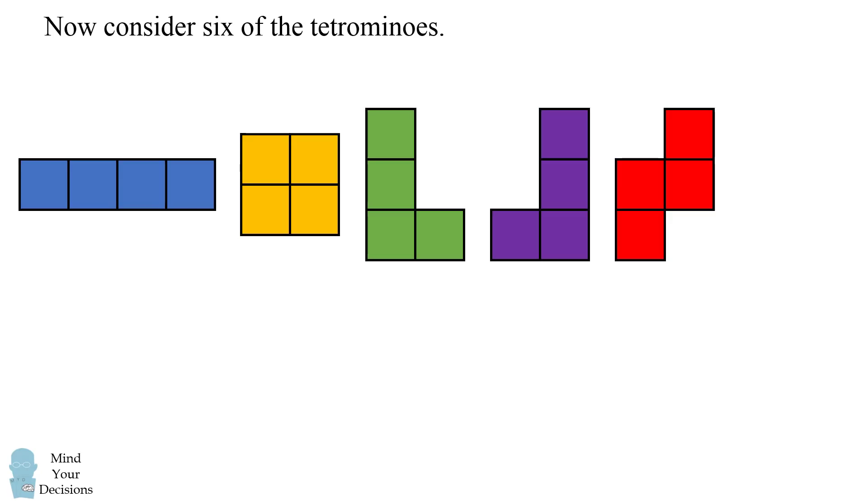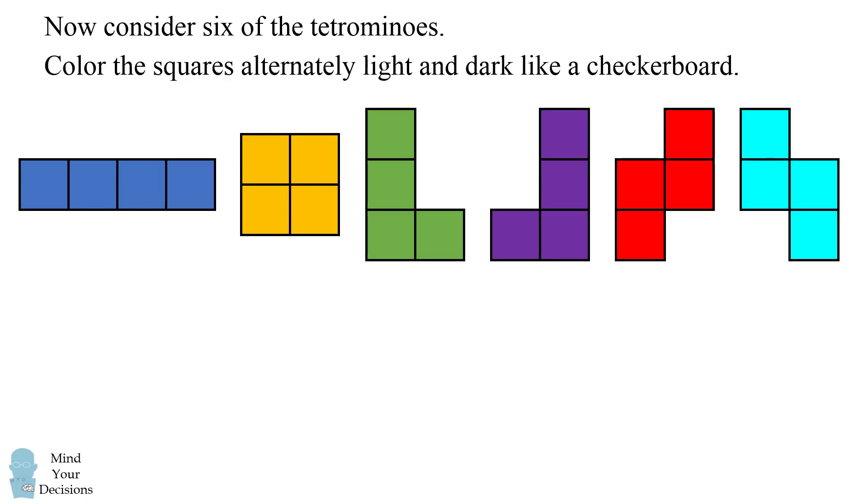Now let's consider a coloring of the tetrominoes. First let's consider the following six tetrominoes. Let's imagine coloring the squares alternately light and dark like a checkerboard.